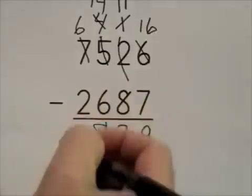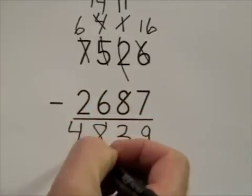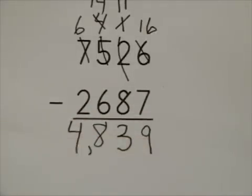6 take away 2 is 4. So, 7,526 minus 2,687 is 4,839.